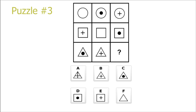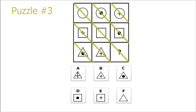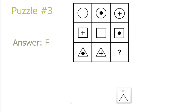Puzzle 3. Here we have the exact same situation, but instead it's circle, square, triangle on the rows, and on the diagonal from the top left to the bottom right we have plus sign, dot, and nothing. So our answer will be a triangle with nothing inside it, which is F.